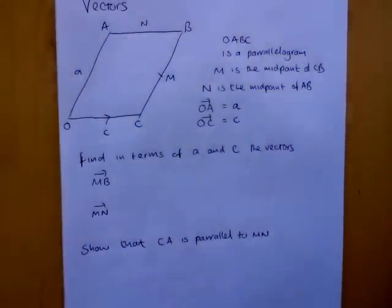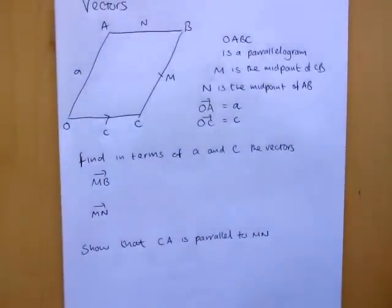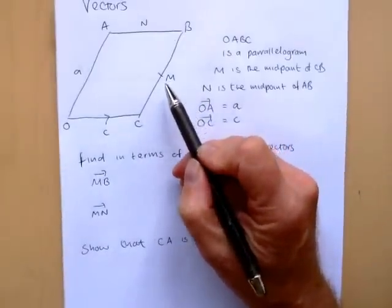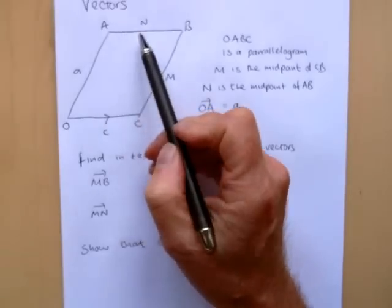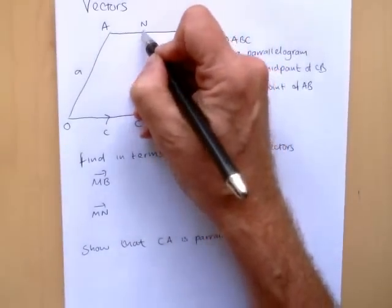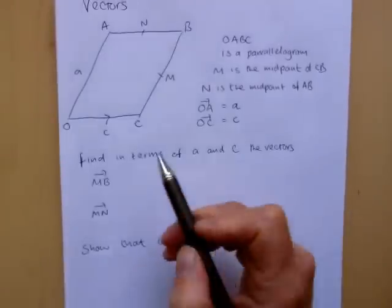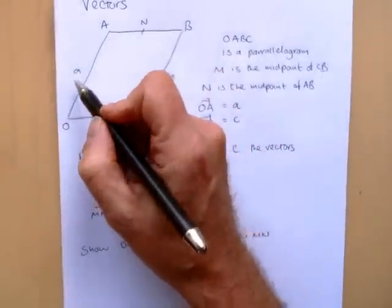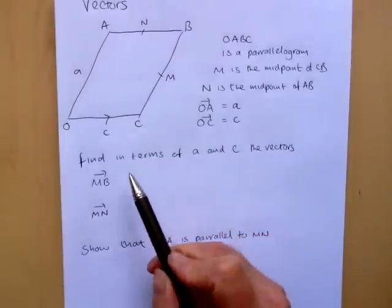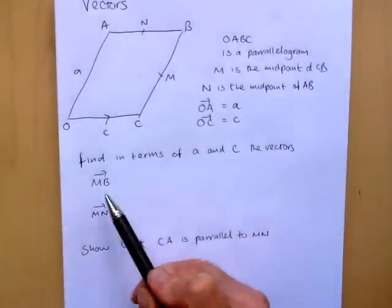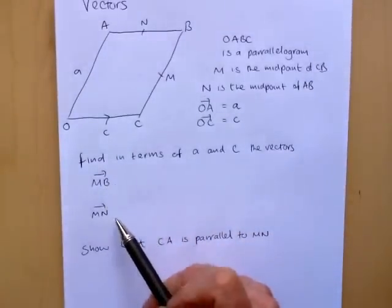So in this vectors question we've been given a parallelogram. We're told that M here is the midpoint of CB and we're told that N is the midpoint of AB. We're told that OA is represented by the vector a and OC is represented by the vector c. So I have to find in terms of a and c the vectors M to B and M to N.